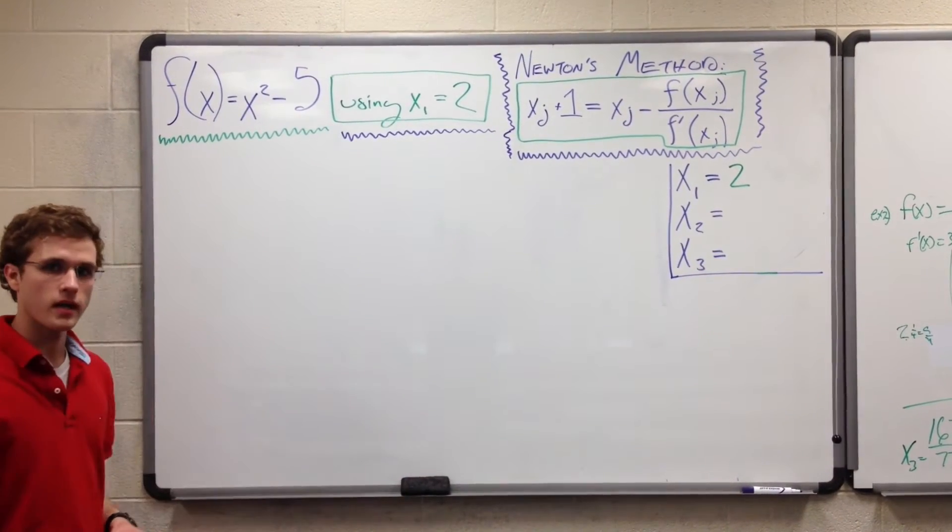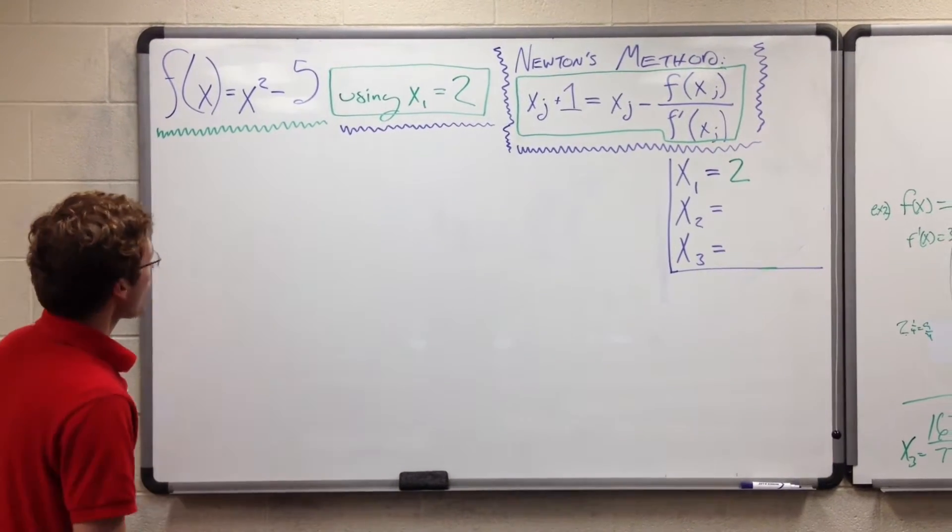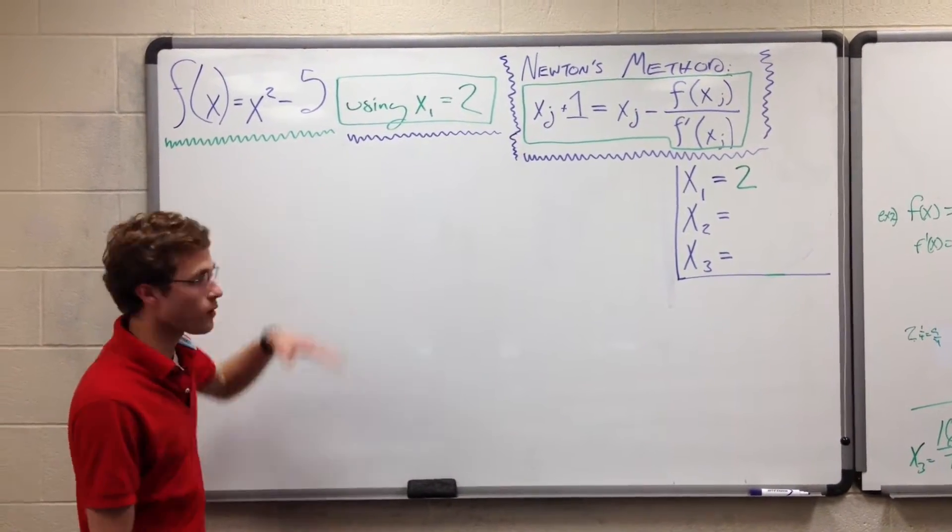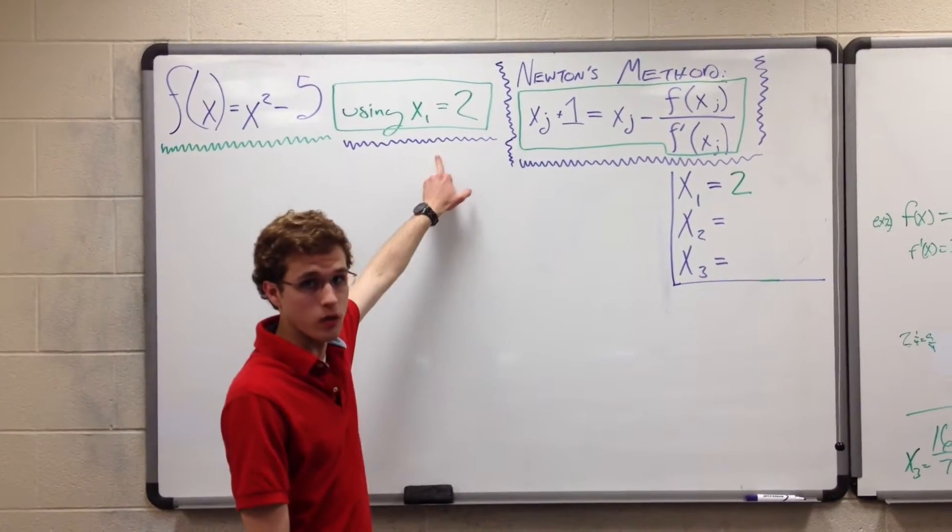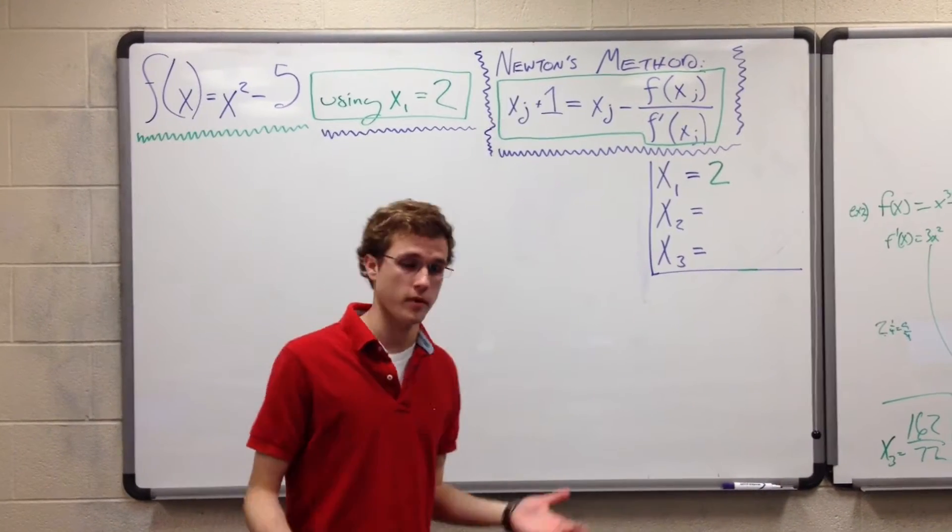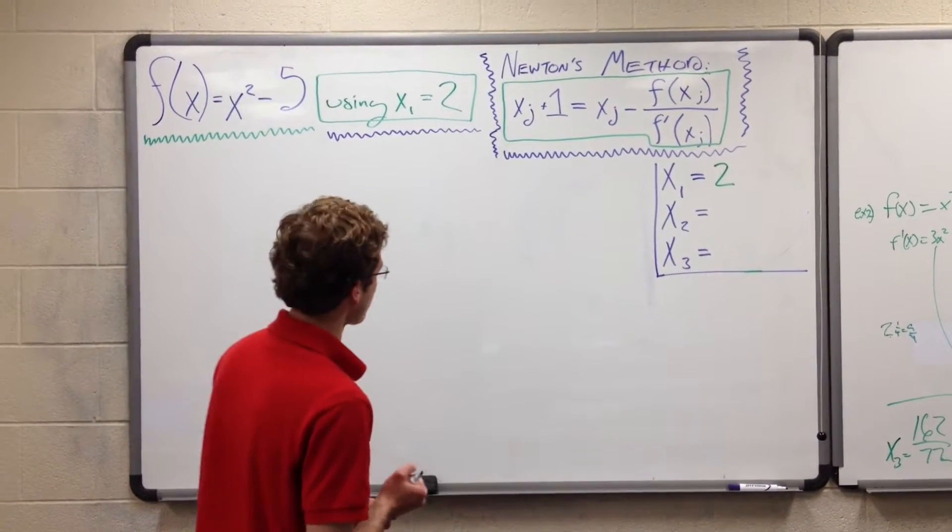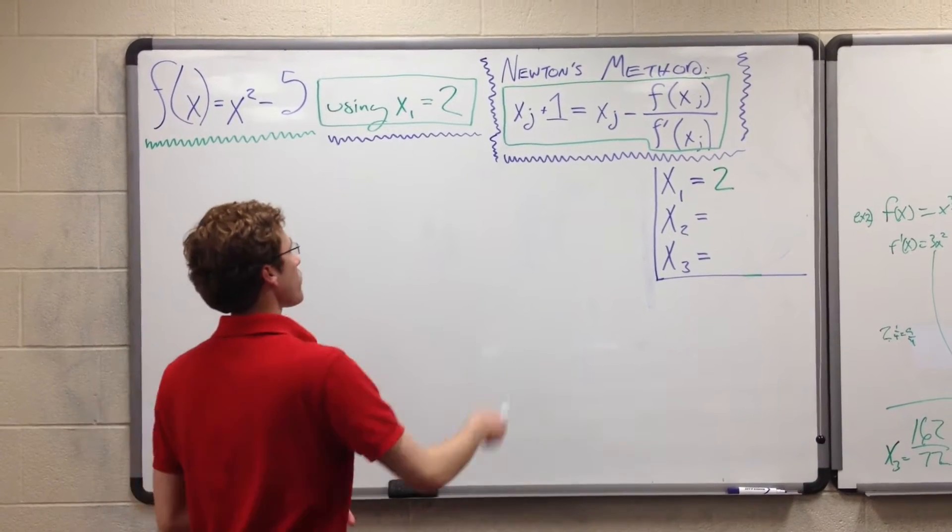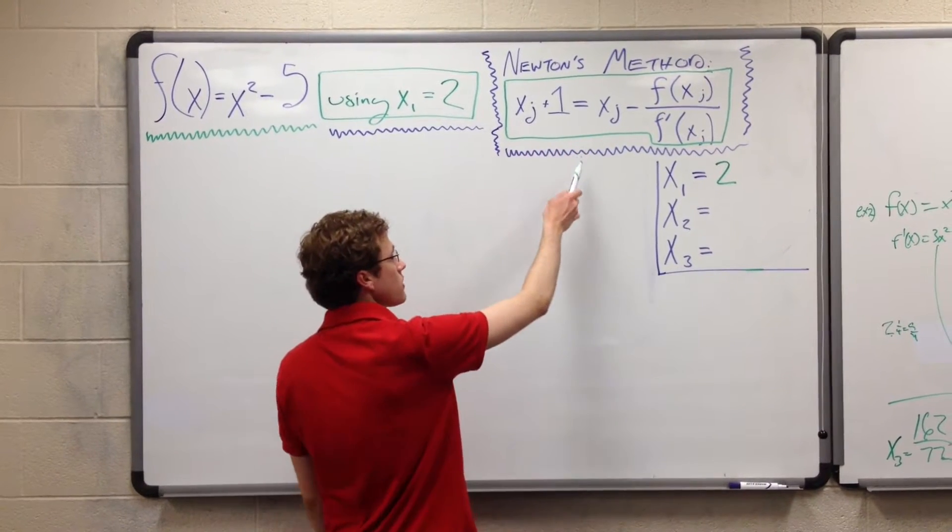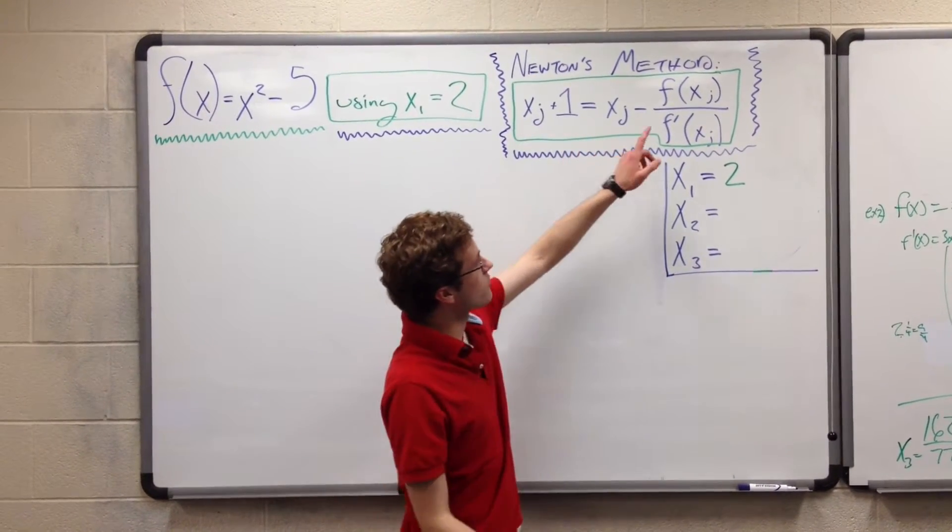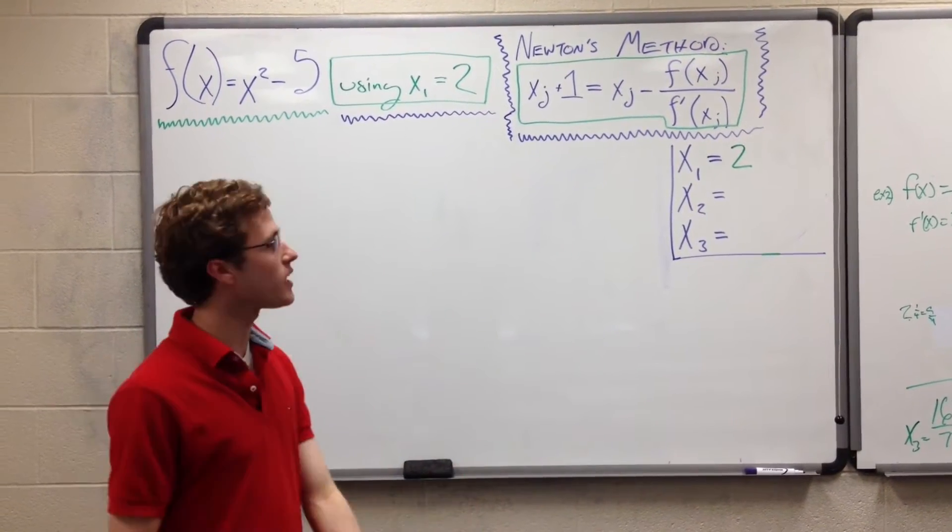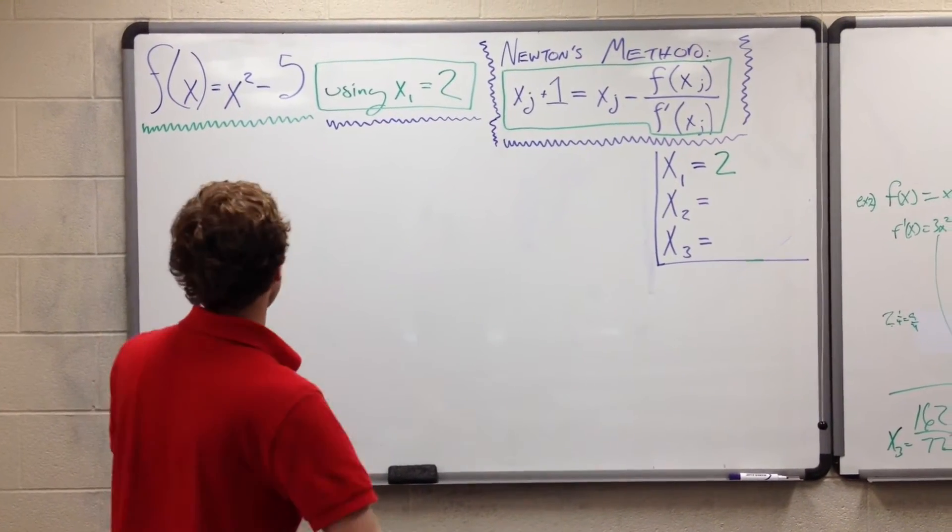We're going to be approximating, using Newton's method, the point of f(x) for this function f(x) = x² - 5, and we're already given our x₁ which is 2. So the first step, we're going to look for our x₂, because we already have our x₁. The first step is to plug everything into Newton's method formula, which says xᵢ₊₁ = xᵢ - f(xᵢ)/f'(xᵢ). So we know we're going to need f'(x), so let's go ahead and get f'(x).